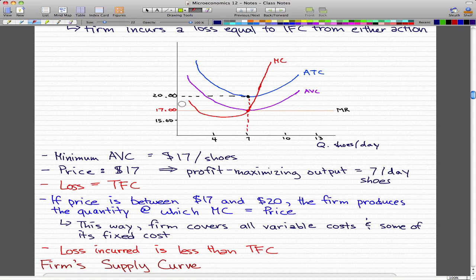If we are selling these shoes at a price between $17 and $20, making 7 shoes per day with a price greater than $17, we will cover our average variable cost and have enough money to cover some of our total fixed costs. So the actual loss that we incur will be less than the total fixed costs.